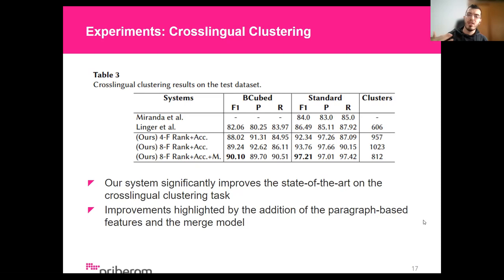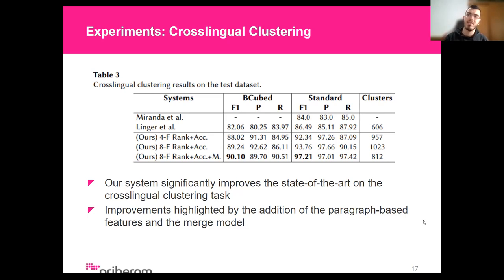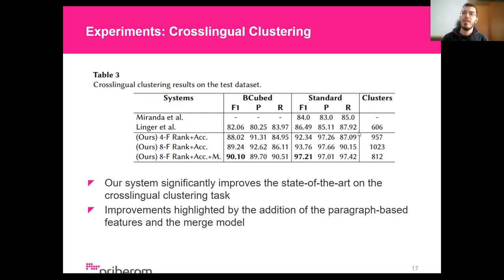Regarding the cross-lingual clustering task, we achieve state-of-the-art performance with an F1 score of 97.21 and a BCubed score of 90.10, representing an improvement of 10.72 and 8.04 points respectively when compared to the results reported by Linger et al. Additionally, we performed an ablation study with the goal of studying the influence of each added component. Starting with our base model using only a general representation and temporal features — the RankSVM plus acceptance — adding the other document dense representations gave a gain of over one point on both metrics, and the implementation of the merge step gave us our best final results: 90.10 BCubed and 97.21 standard F1.